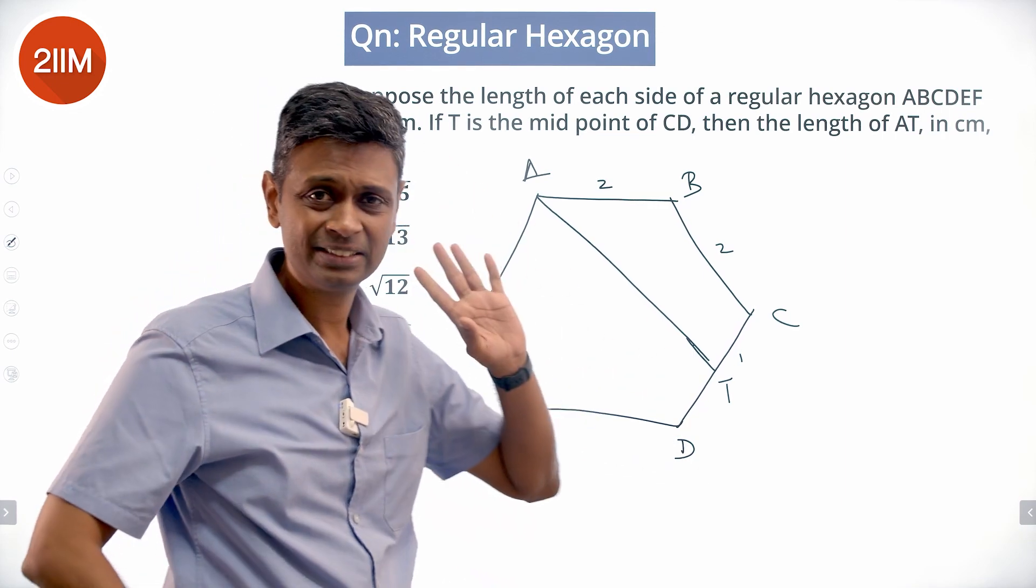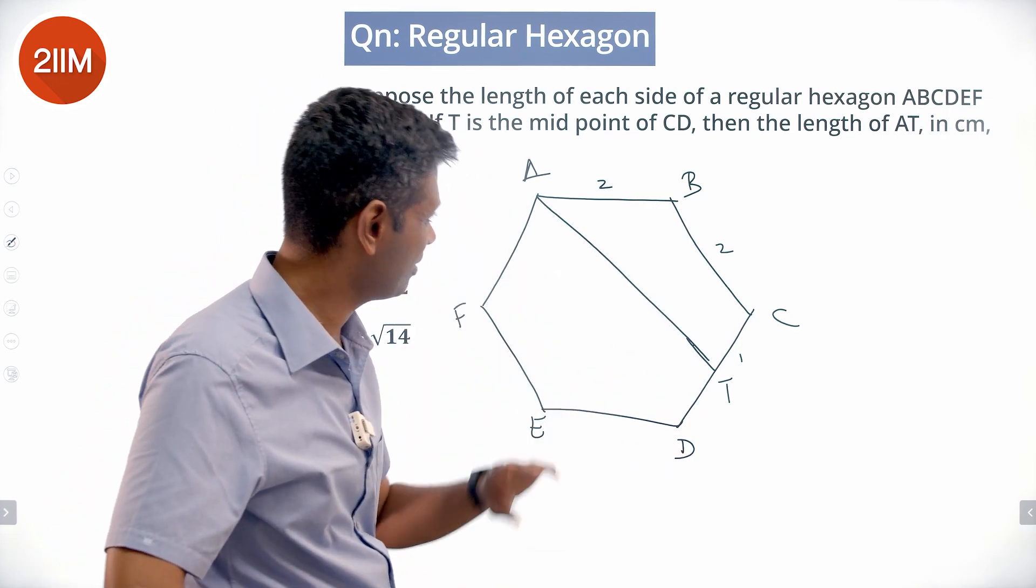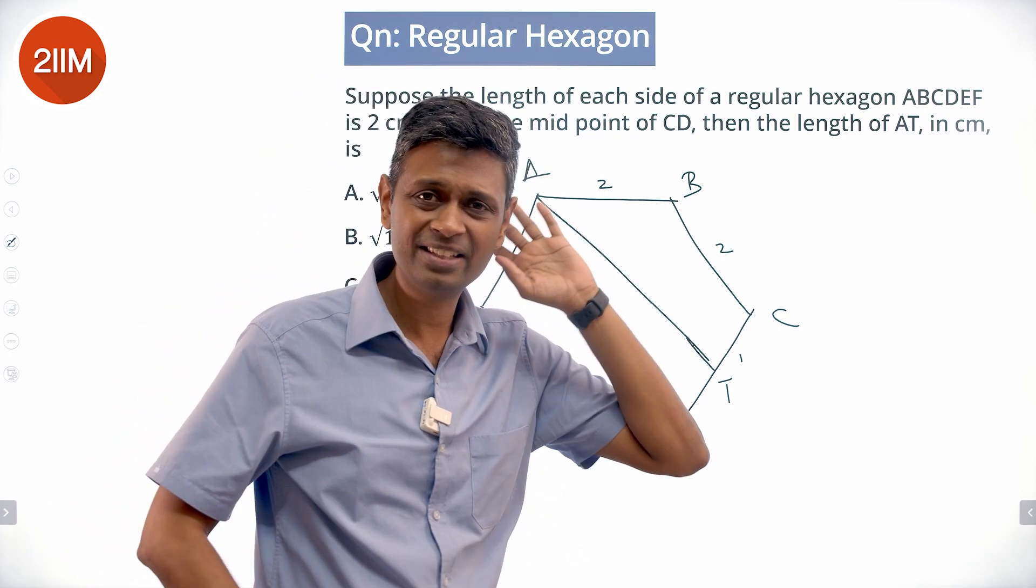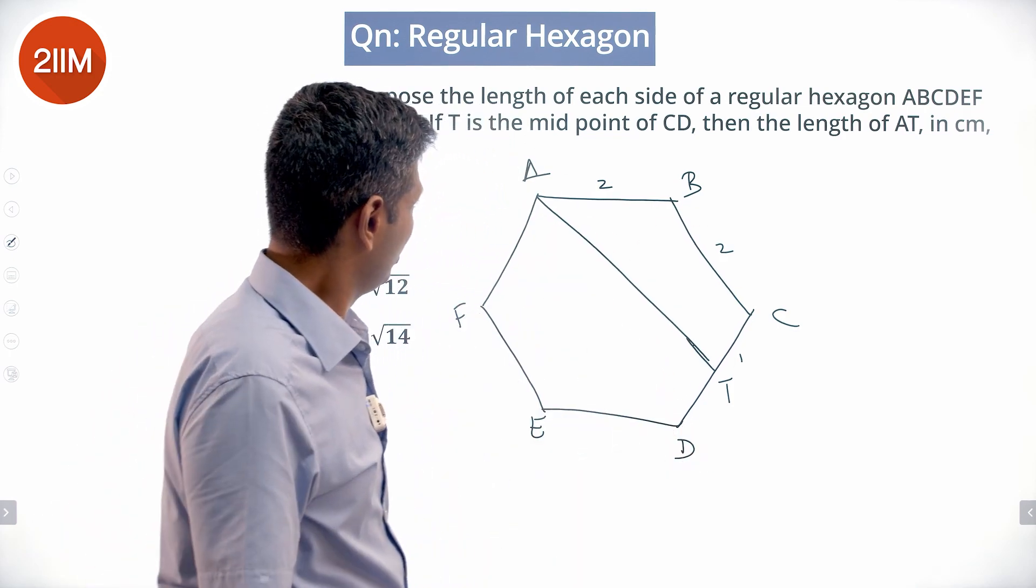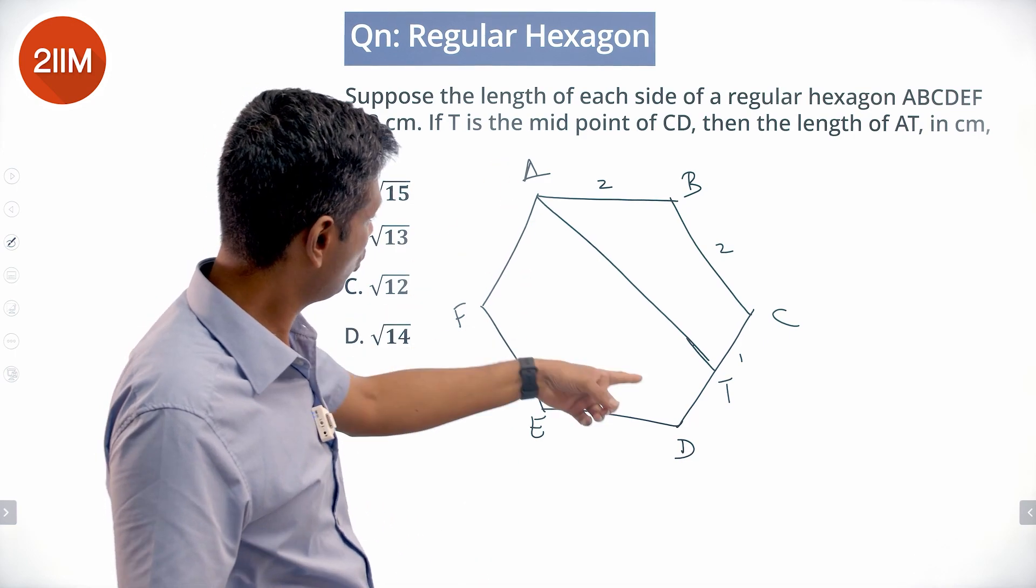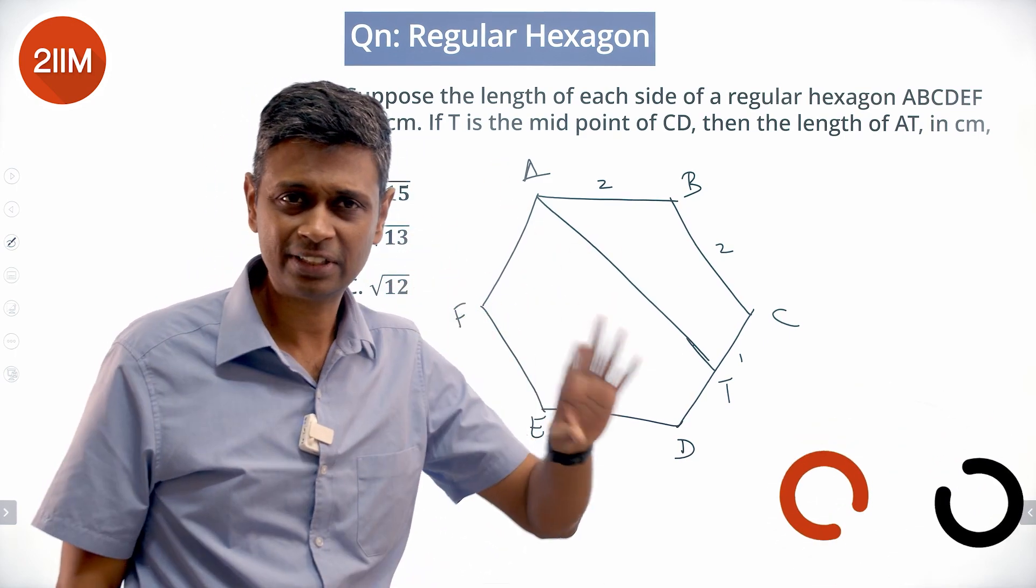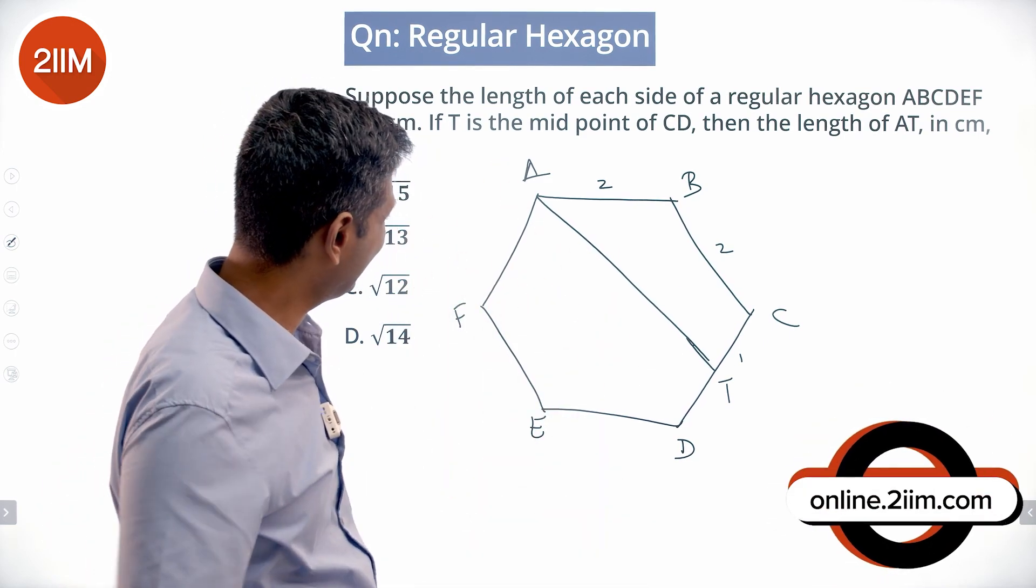If it were a diagonal it would be easy. AD measures 4. AC is easy - AC measures 2√3. That is nice and simple. But we want to find AT, that is going to be interesting.